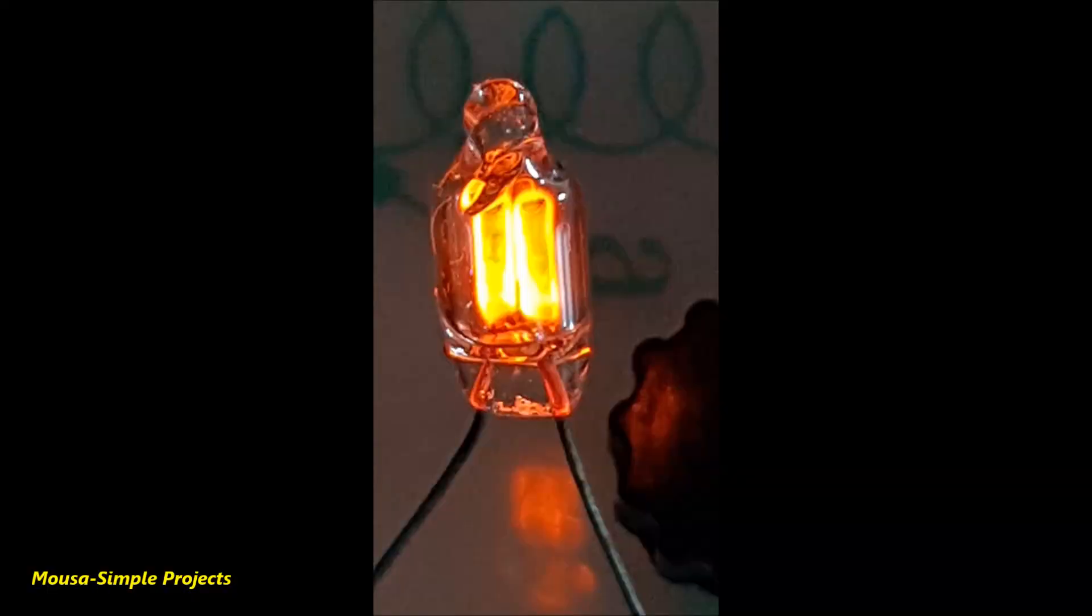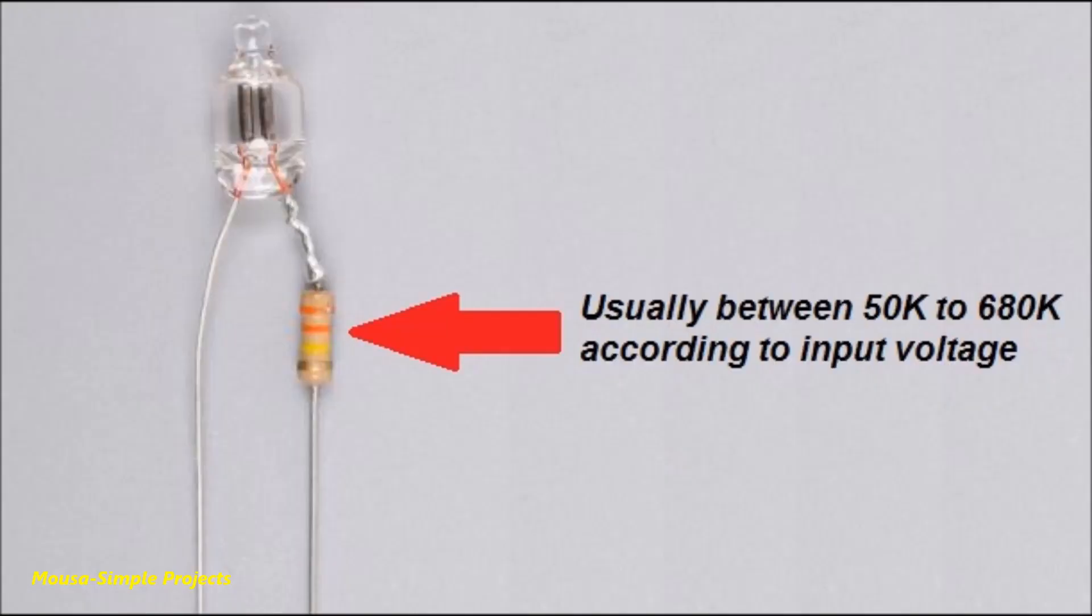Neon lamps are made by a mixture of neon gas and some other gases at low pressure. When the voltage across two electrodes reaches the breakdown voltage, the gas ionizes and glows. Neon lamps need a current around 1 mA or even less. For this reason we connect a resistor in series with the neon lamp for current limiting.